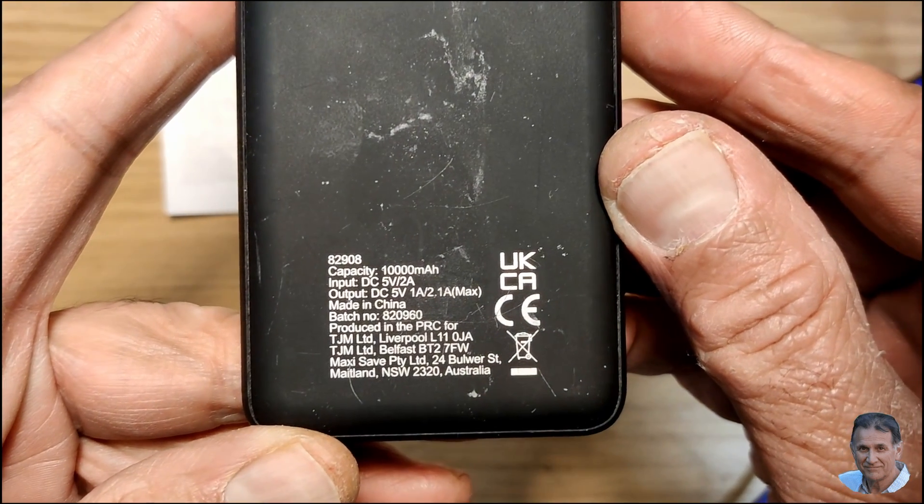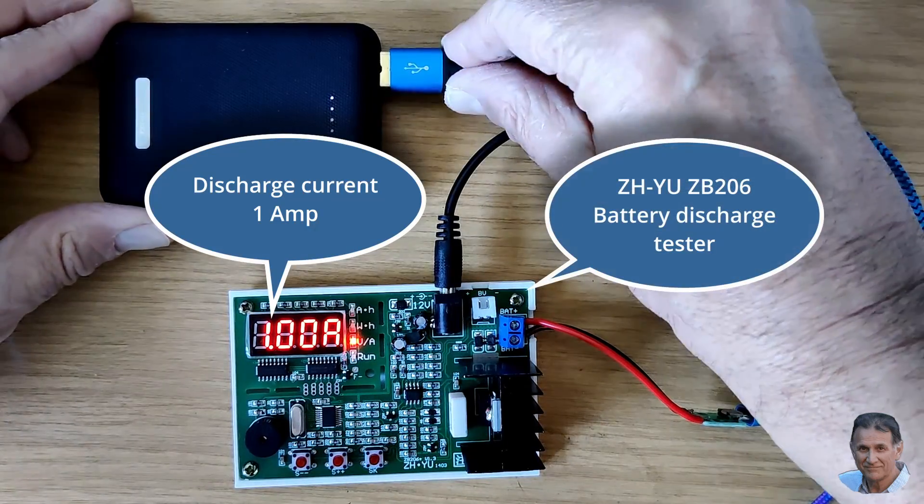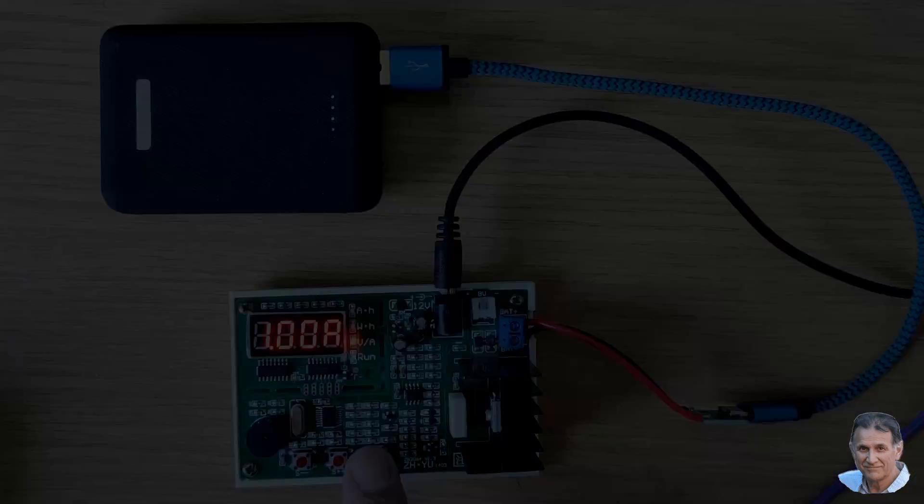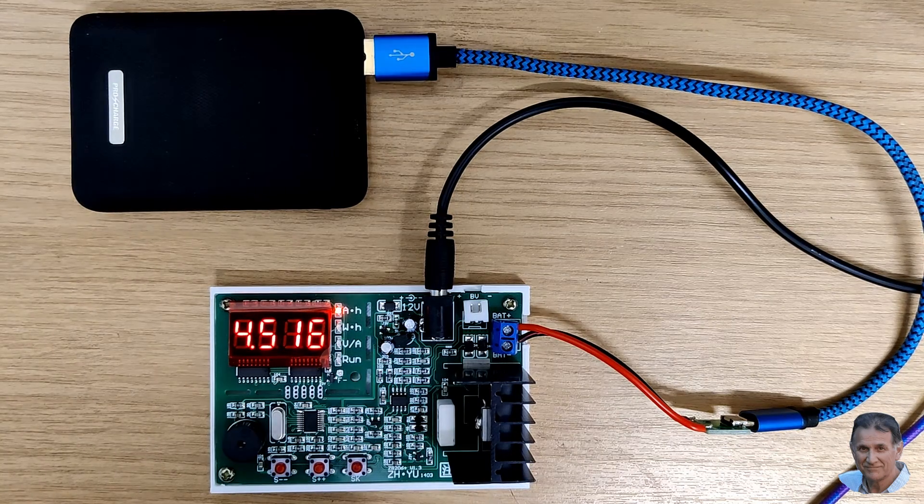To test the power bank, I charged it fully overnight, then connected it to my battery capacity tester and set the discharge current to 1 amp. After a few hours, the voltage dropped to the preset discharge level and the test stopped.